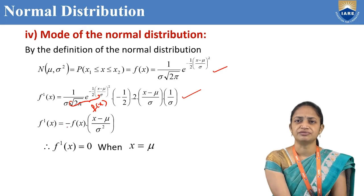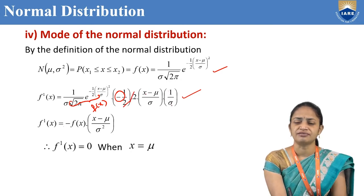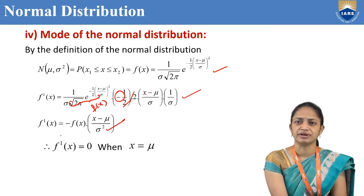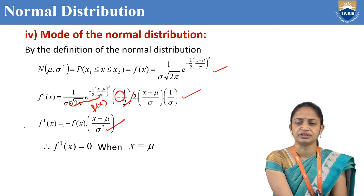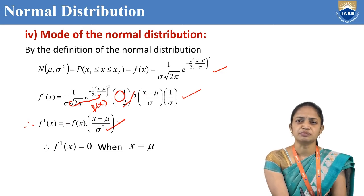So F'(x) equals minus F(x) into (x−μ)/σ² — that is, F'(x) = −F(x) · ((x−μ)/σ²).